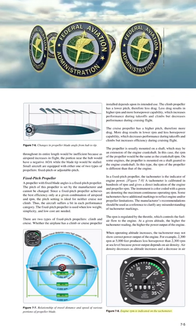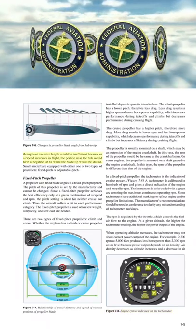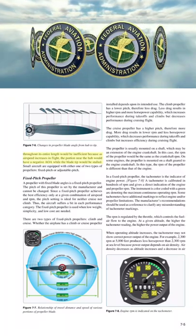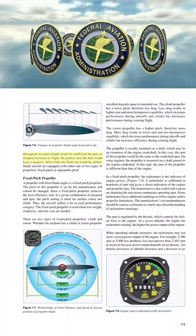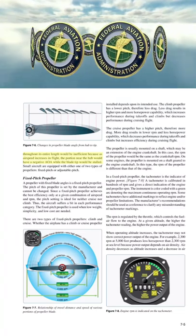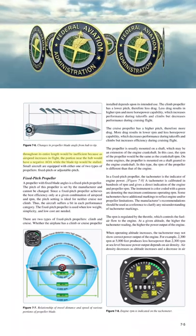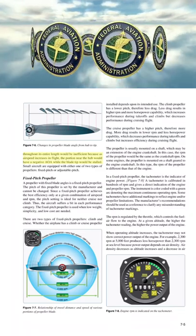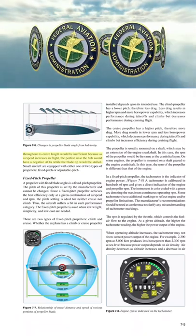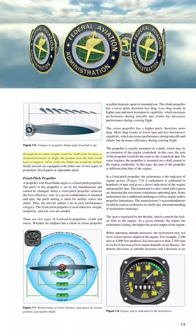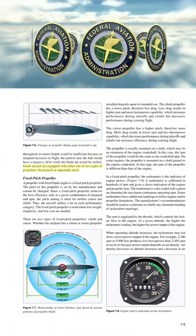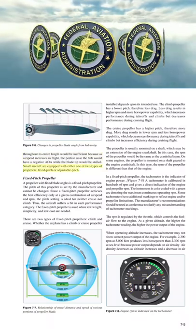Engine RPM is indicated on the tachometer. A propeller blade designed with the same angle of incidence throughout its entire length would be inefficient because, as airspeed increases in flight, the portion near the hub would have a negative angle of attack while the blade tip would be stalled. Small aircraft are equipped with either one of two types of propellers: fixed pitch or adjustable pitch.